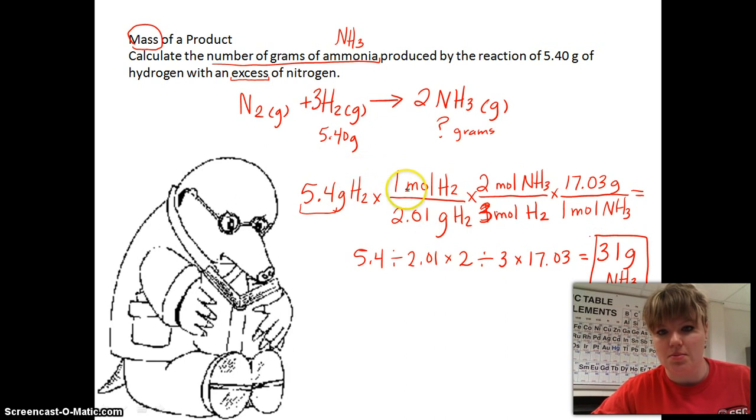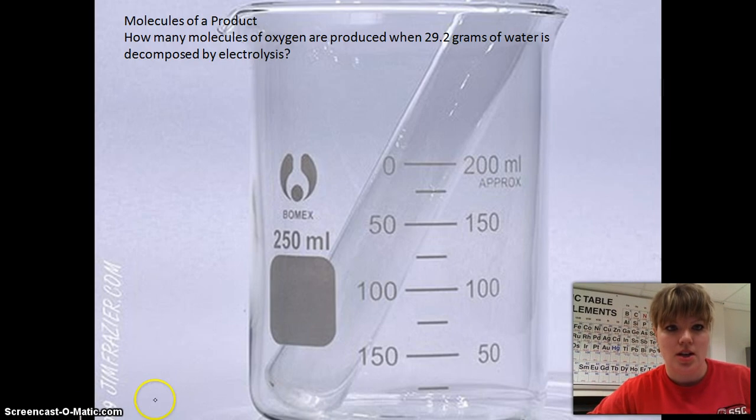So here we go from grams to mole. Here we go from mole of one compound to mole of another compound. And here we go from moles to grams again because we were looking for mass. And we could have also went to grams of nitrogen by just using, instead of using this conversion factor, using one mole of nitrogen over three moles of hydrogen. So these mole ratios really help us move through calculations.